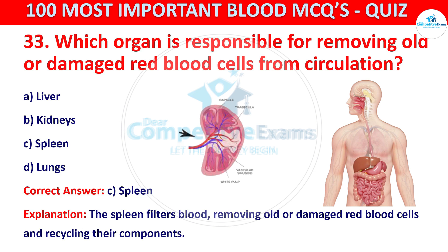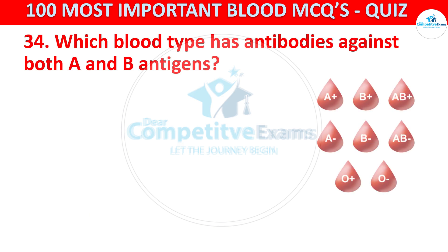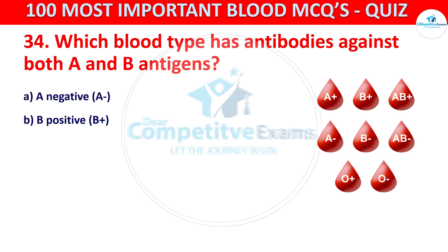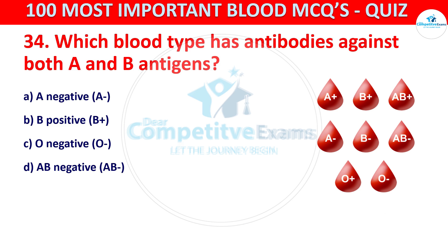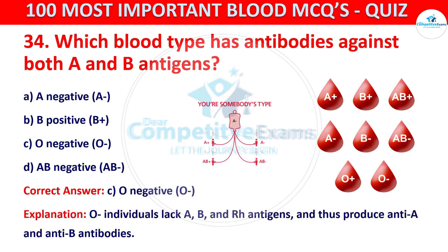Question number 34. Which blood type has antibodies against both A and B antigens? Your options are A negative, B positive, O negative, or AB negative. The correct answer is C, that is O negative. O individuals lack A, B, and RH antigens, and thus produce anti-A and anti-B antibodies.